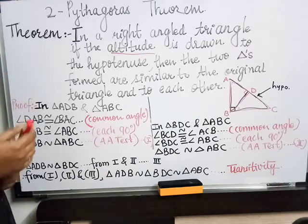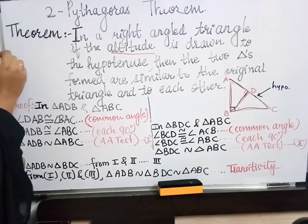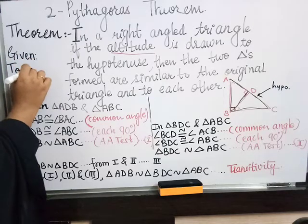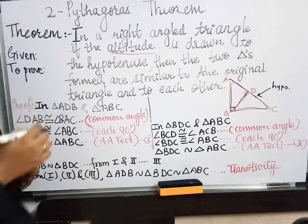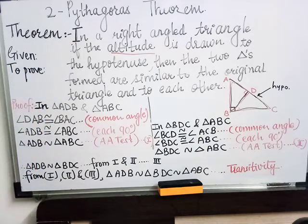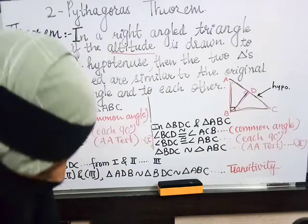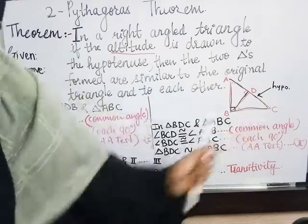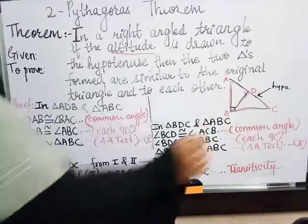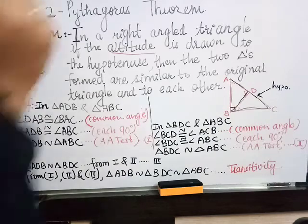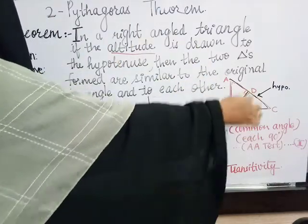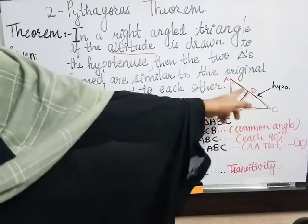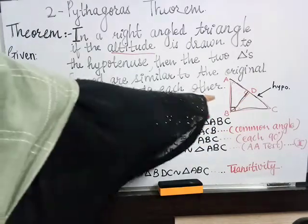For every theorem you have to write the Given and To Prove sections. In the Given, you will write: in triangle ABC, angle ABC is 90 degrees. And segment BD is perpendicular to segment AC.